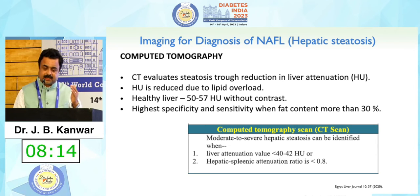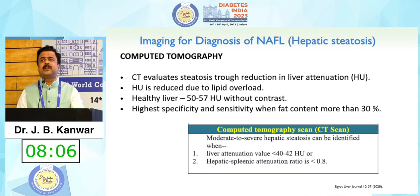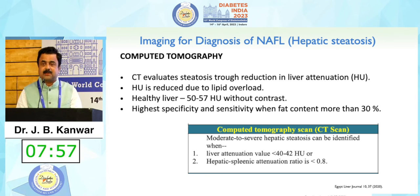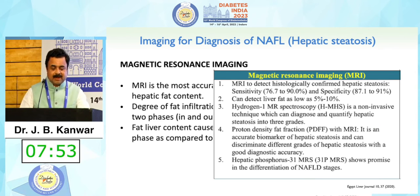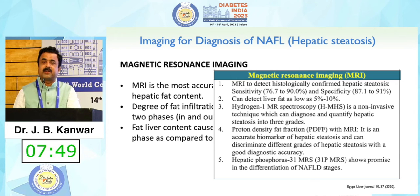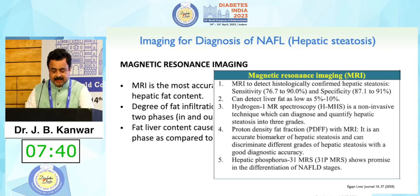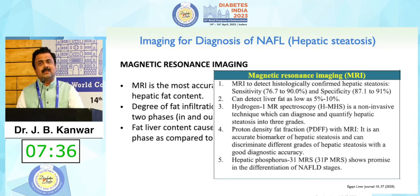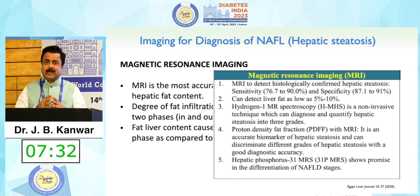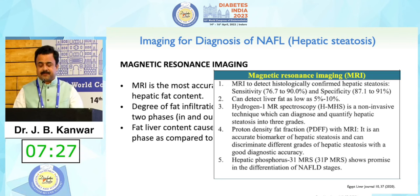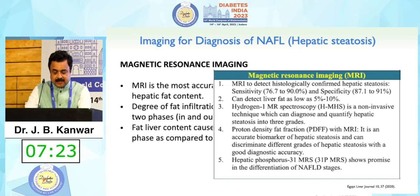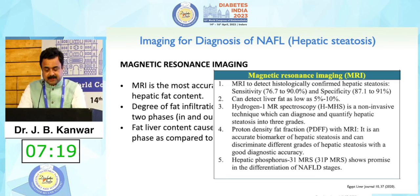CT scan can also detect steatosis — liver attenuation is reduced due to lipid overload. The normal Hounsfield unit of the liver is 50 to 57, but when HU decreases below 40, you are probably dealing with hepatic steatosis. MRI is the most accurate method for detection and quantification of hepatic fat content. In out-of-phase MRI, liver signal intensity decreases in patients with hepatic steatosis. More advanced MRI techniques like proton MR spectroscopy (MRS), proton density fat fraction (PDFF), or hepatic phosphorus-31 MRS can more accurately stage the different degrees of steatosis.